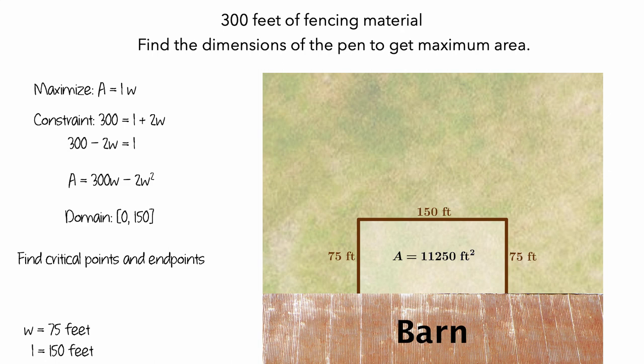Our general strategy was to make an algebraic model for the quantity we wanted to maximize. Then we wrote an expression for the constraint and used it to write one variable in terms of another, letting us rewrite our model in terms of a single variable. Then we identified the domain, found the critical points and endpoints, and computed the area for each of these values of W to find the value that produced the largest area, thereby maximizing the area of the pen.